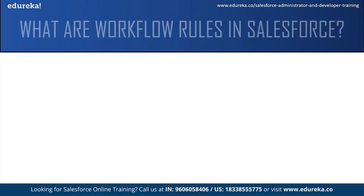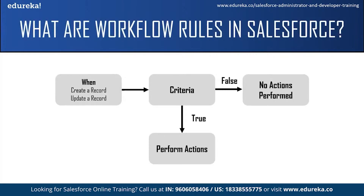Criteria is basically the condition that causes the workflow rule to run. Only if the condition is true are the actions automatically performed. If the condition is false, then the workflow rule does not apply. Actions are automatic tasks which are performed after the criteria is met, or when the condition is true.